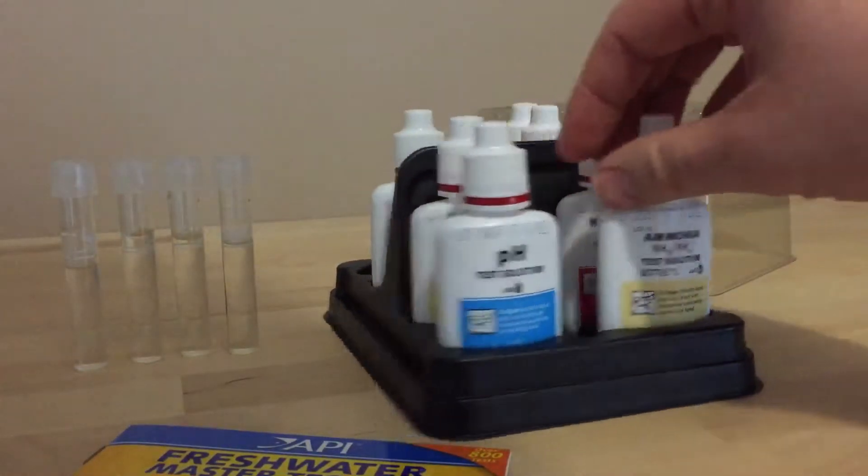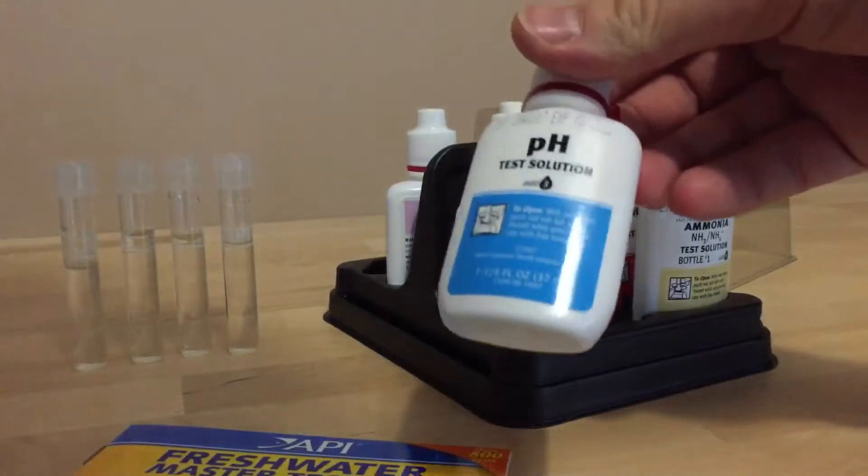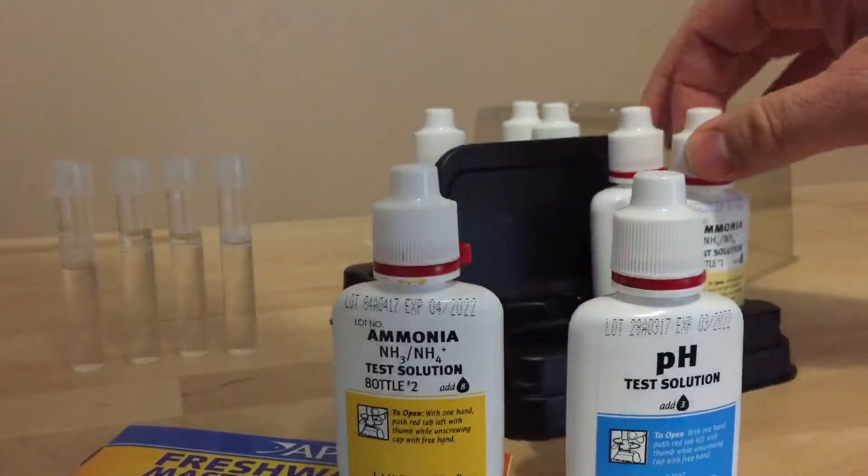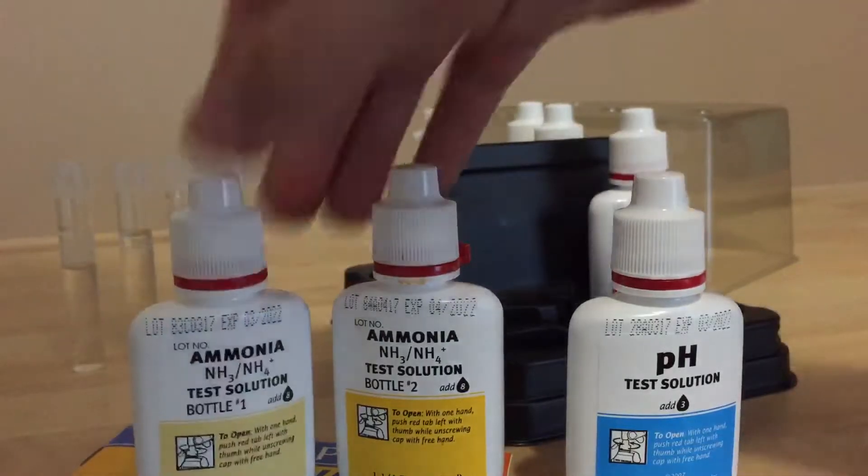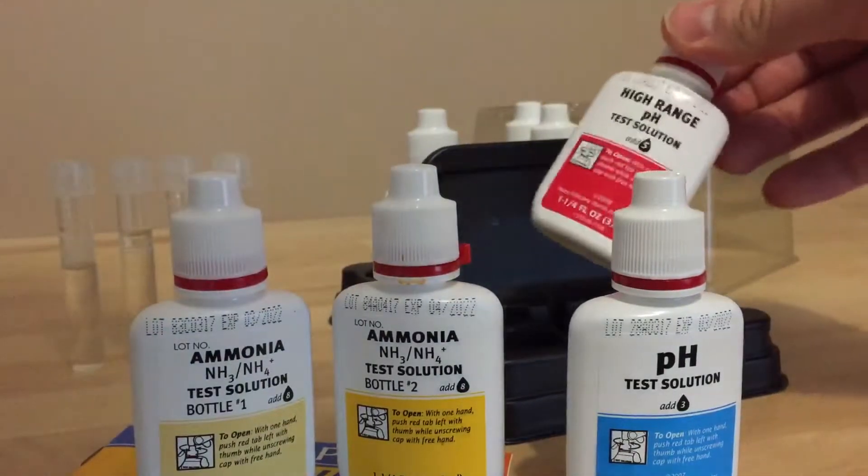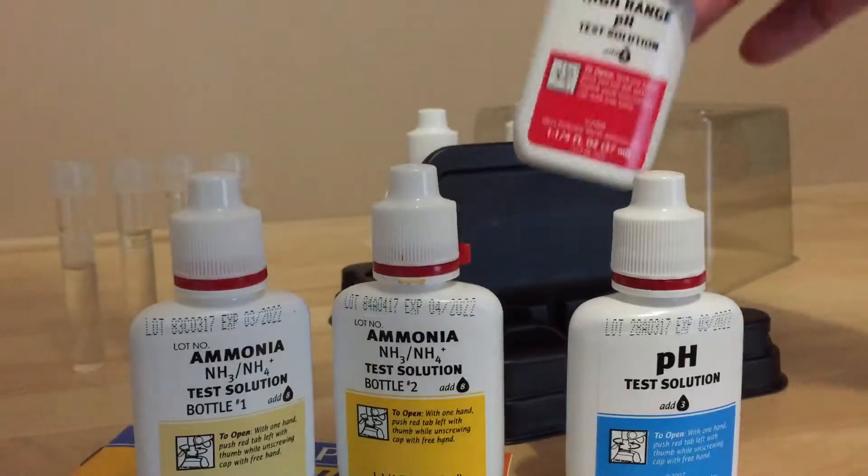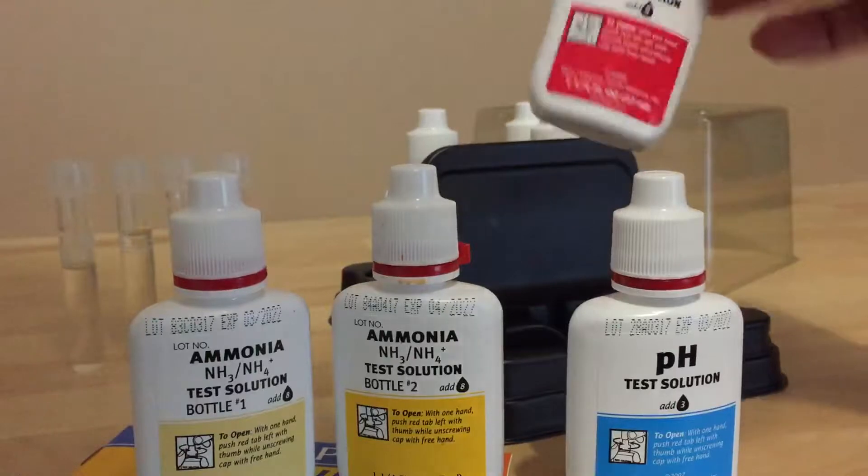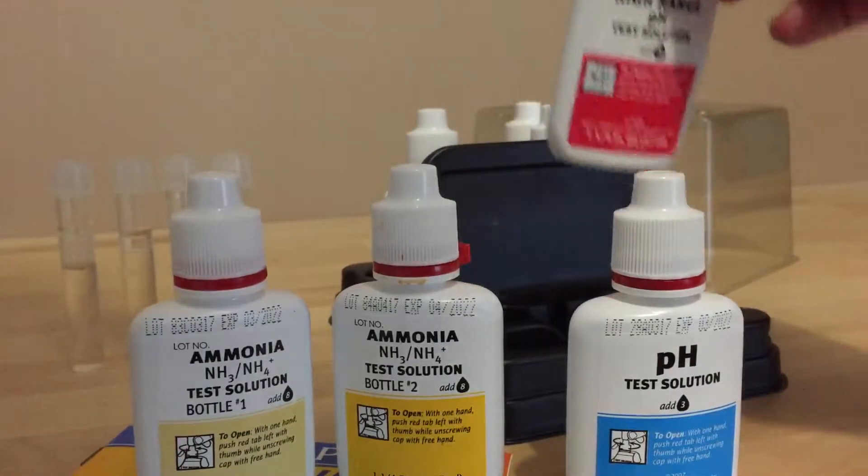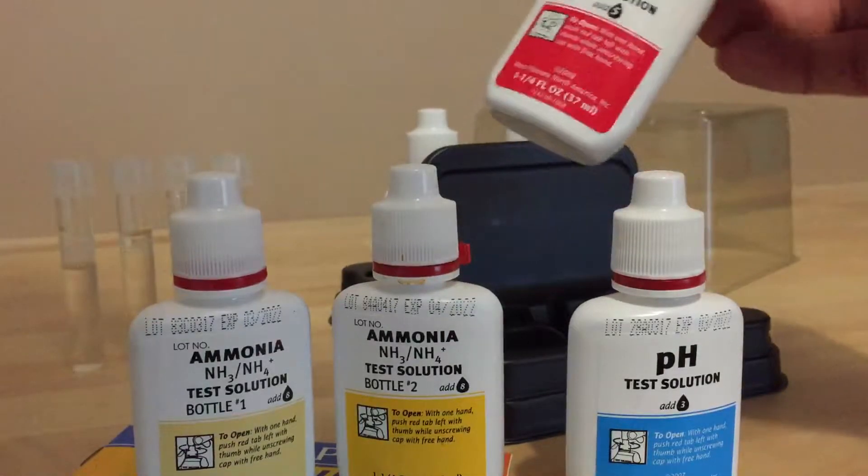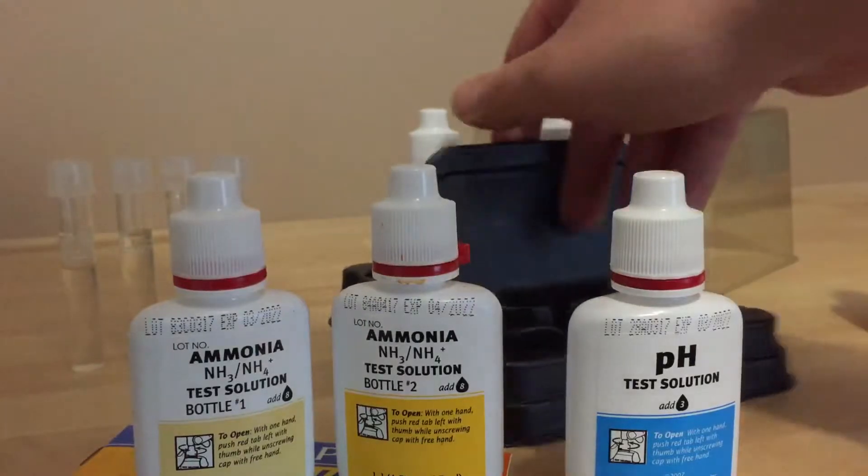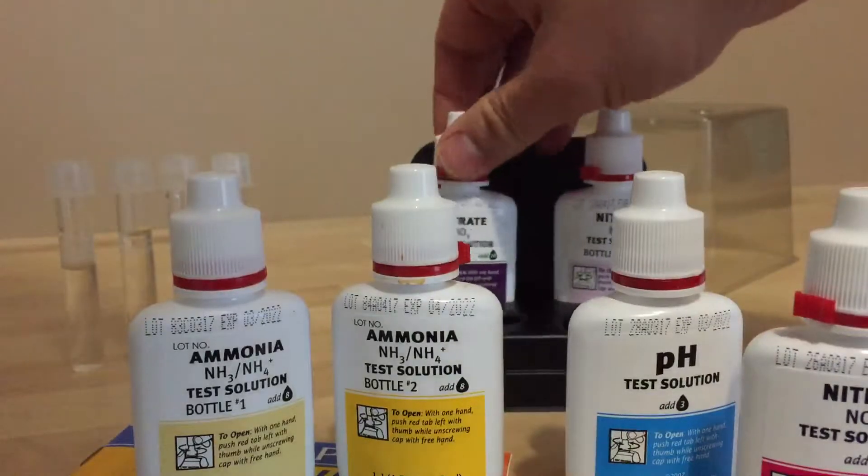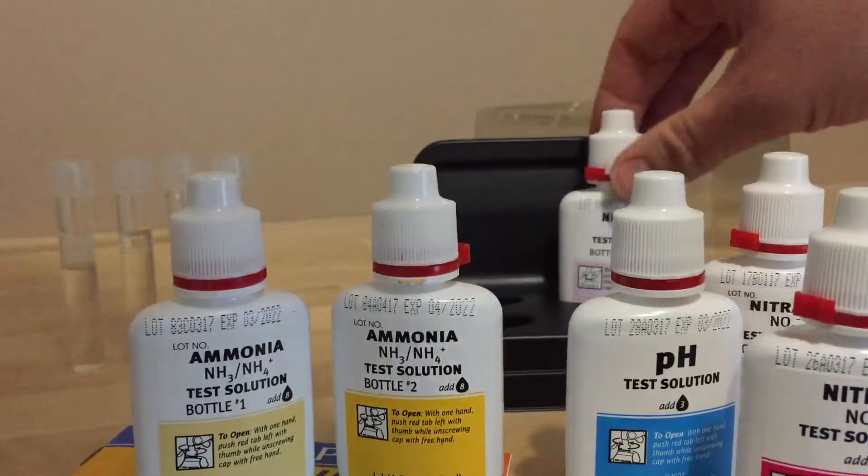These kits have everything: you have tests for pH, there's ammonia which actually has two bottles for the test, there is a high pH range test. Some fish require a higher pH. The tank I'm cycling at the minute, in fact none of the tanks I have, I would use this for, but some fish do require this and it's there if you need it.